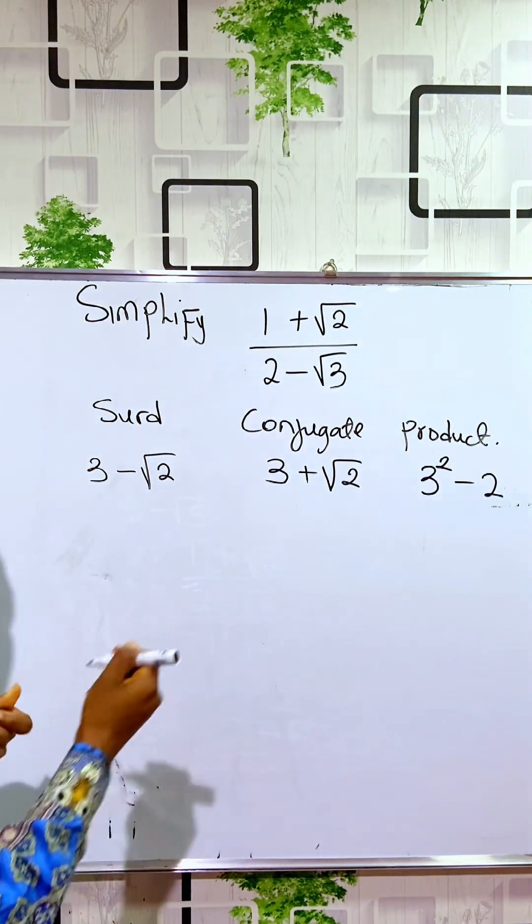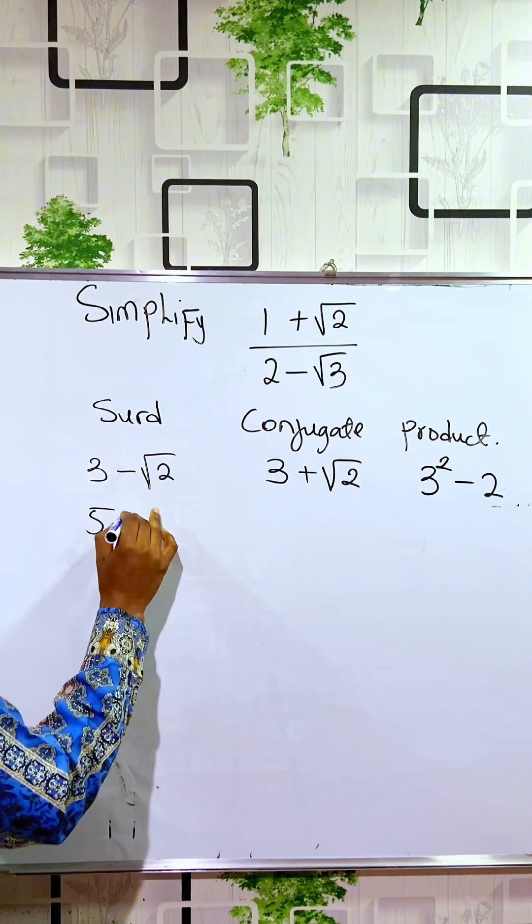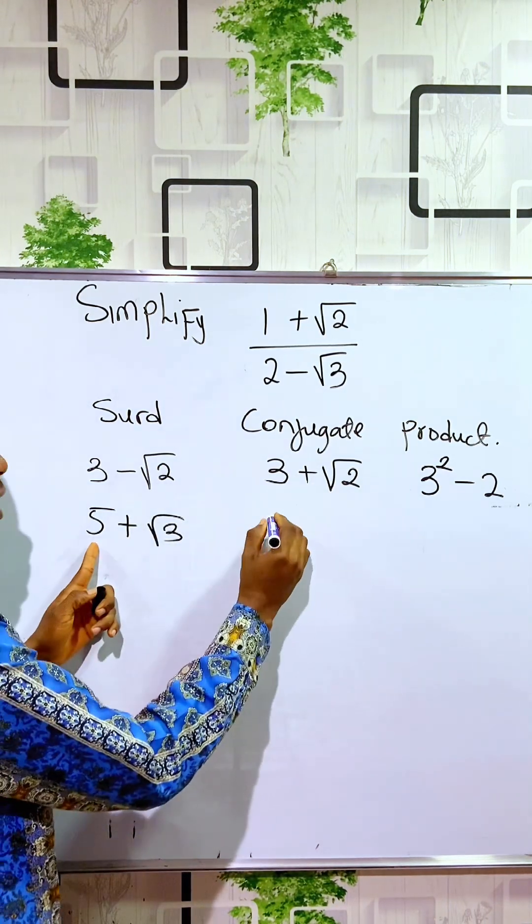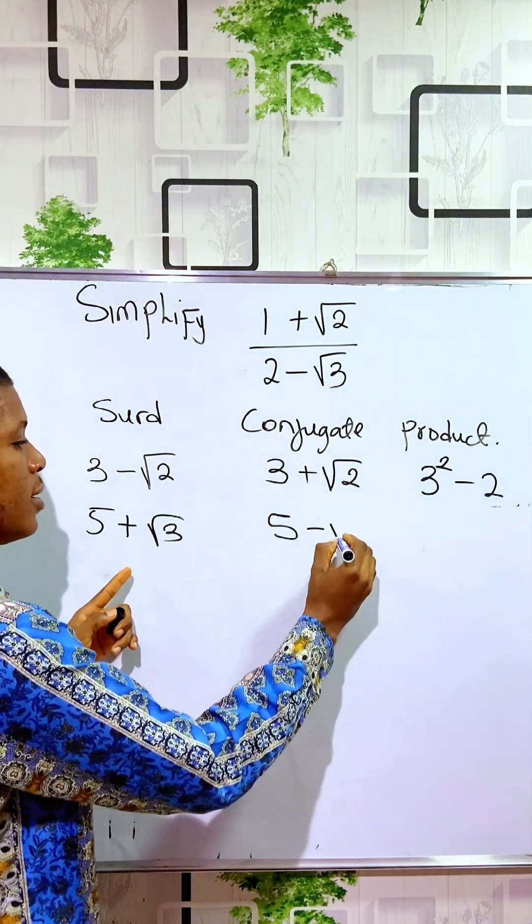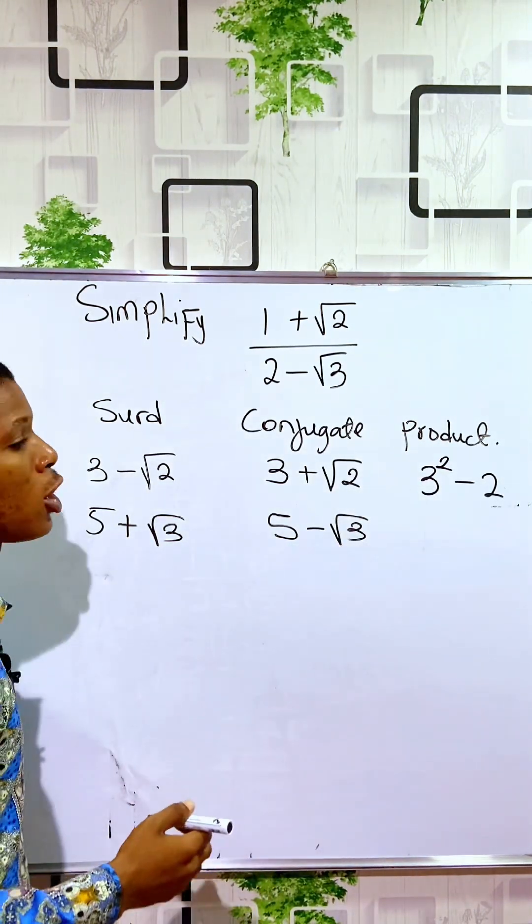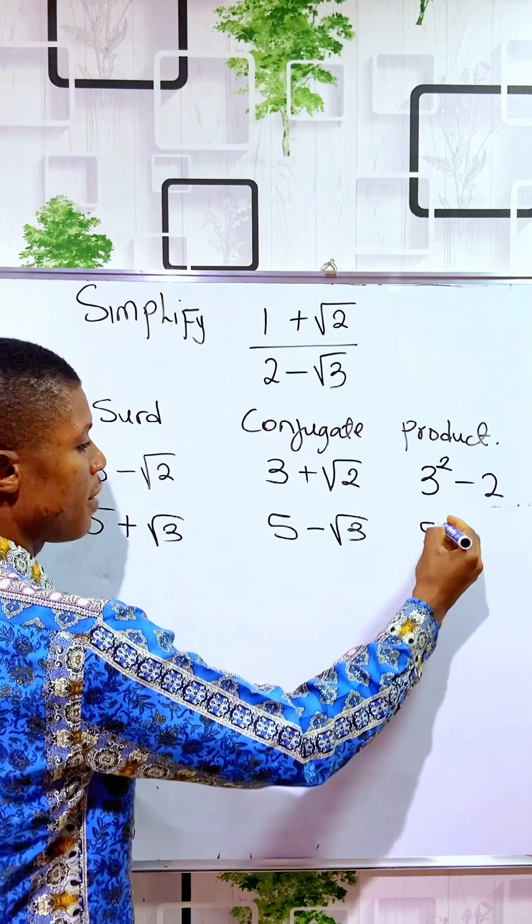Let me give you another instance. I have 5 + √3. The conjugate, you have to change the sign to minus, you have 5 - √3. Then here what you are going to do is the first number 5 squared, then here is now minus 3.